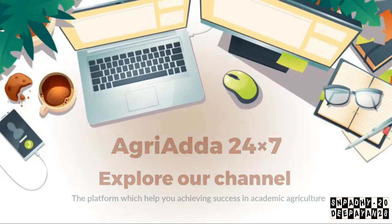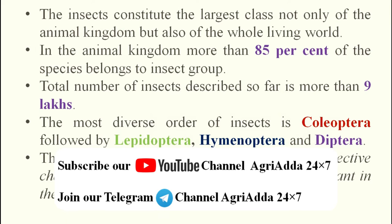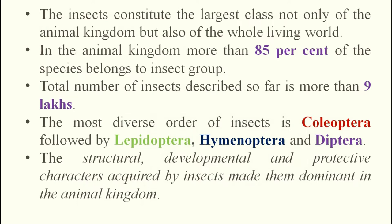Insects constitute the largest class not only of the animal kingdom but of the entire living world. In the animal kingdom, more than 85 percent is contributed by the insect group alone, with a total of 9 lakh described species. Order-wise diversity: first Coleoptera, then Lepidoptera, then Hymenoptera, and then Diptera.